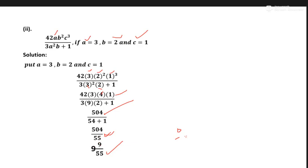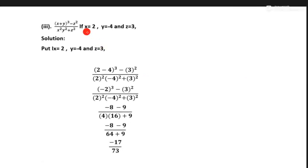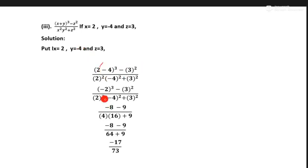Question number 3: same process — put values in the equation. Apply a plus 2 minus 3. Put these values: x equals 2, minus 4 is value of y, and plan is 3 whole square. So 2 minus 2 is 8 and it is 9. So 8 minus 9 is minus 17, and 64 plus 9 is 73.